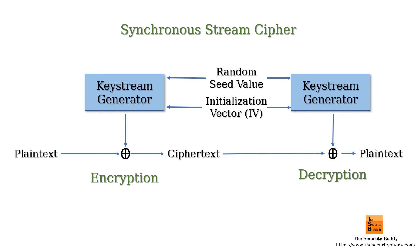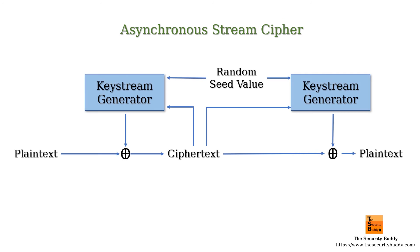In a self-synchronizing stream cipher, or asynchronous stream cipher, the key stream depends on the cipher key as well as a fixed number of cipher text digits that have already been produced at the time of encryption or received at the time of decryption.